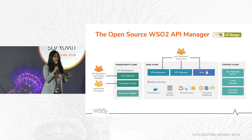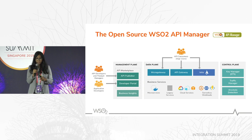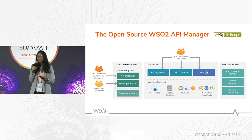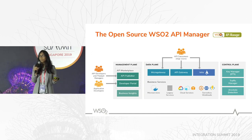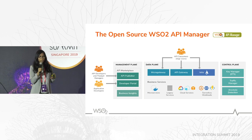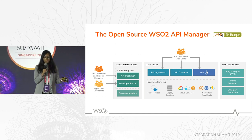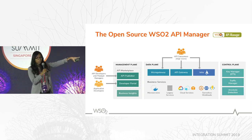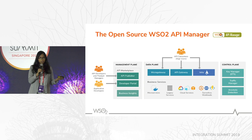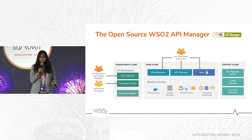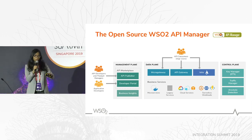Let me quickly run you through what these components do and what the flow looks like. Components fit into a management plane, a data plane, and a control plane. Let's assume your developers have created their microservices and now want to expose them as managed REST APIs using the WSO2 API Manager. The API developers or microservice developers themselves can go to the API publisher in the management plane and add information about these microservices — like how to access them, what the backend endpoint is. You can add documentation, version the APIs, and manage the lifecycle of that API through the API publisher portal.